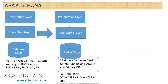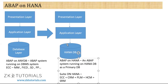Suite on HANA comes with solutions like ECC, CRM, PLM, HCM, and SRM. Here an ABAP system is running on HANA database where HANA database is the primary database. With HANA database we can do much faster parallel processing and keep all the data in RAM. We also need to reduce the memory footprint to store data, and we don't need secondary indexes — only primary indexes. So there are a lot of benefits.